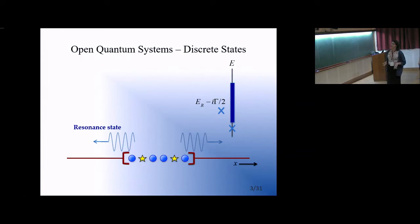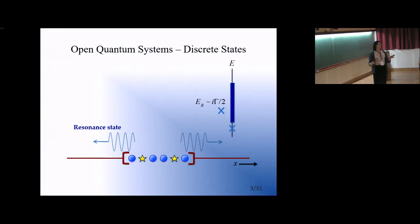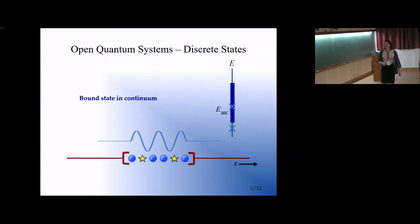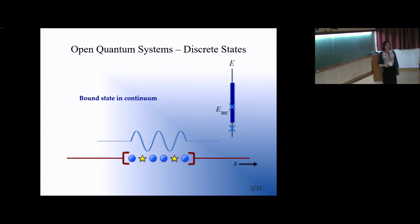As a special case of the resonance state, when we have a perfect quantum interference effect, the imaginary part of the resonance eigenvalue vanishes. That's when you have the bound state in continuum eigenvalue appearing directly in the continuum. The eigenstate for that state has support in the discrete sector, but due to interference it decouples from the environmental region and basically vanishes there.